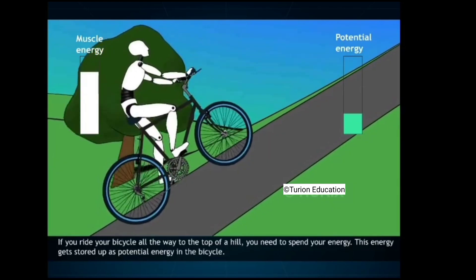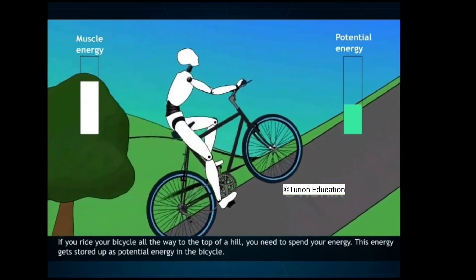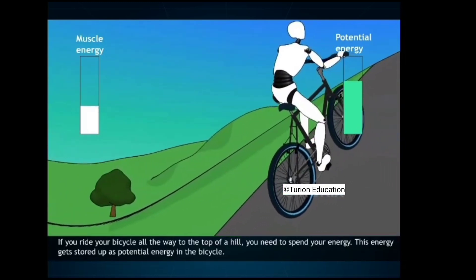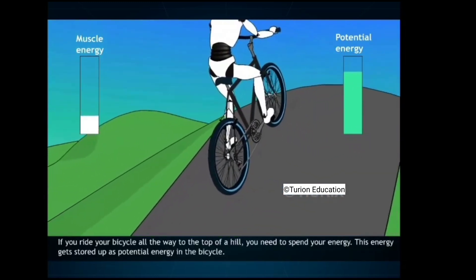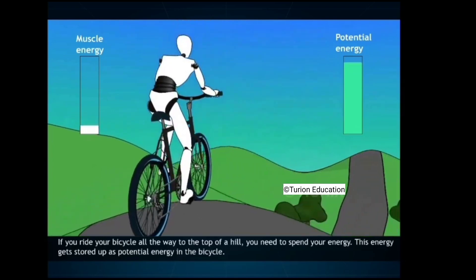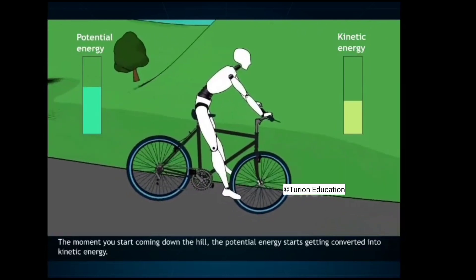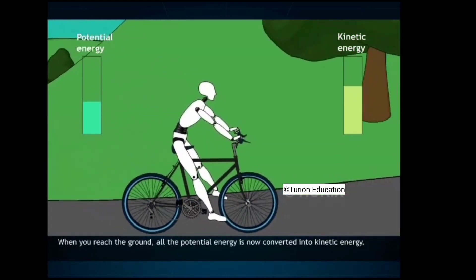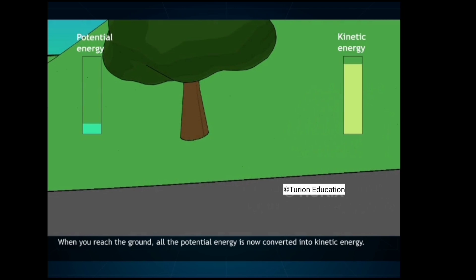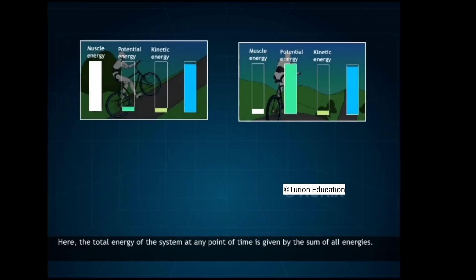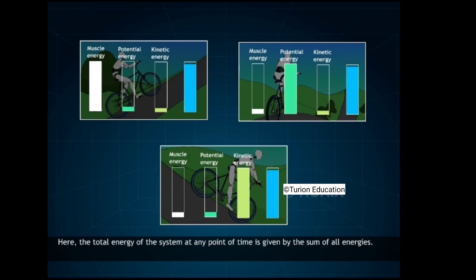If you ride your bicycle all the way to the top of a hill, you need to spend your energy. This energy gets stored up as potential energy in the bicycle. The moment you start coming down the hill, the potential energy starts getting converted into kinetic energy. When you reach the ground, all the potential energy is now converted into kinetic energy. Here, the total energy of the system at any point of time is given by the sum of all energies.